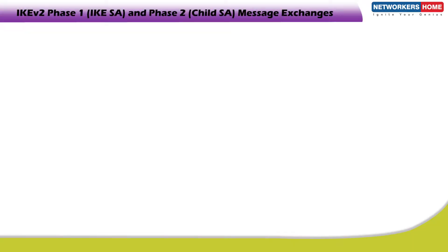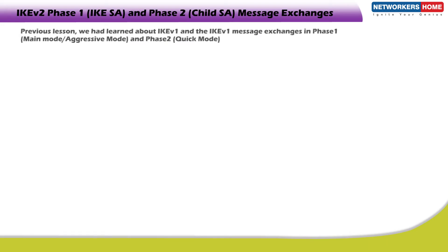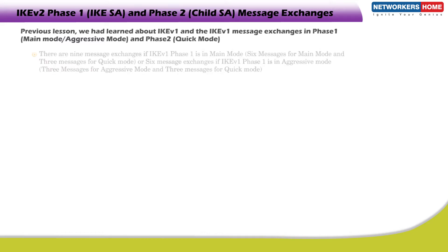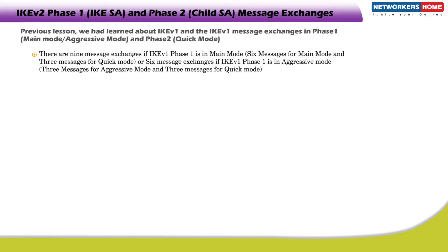IKE V2 Phase 1, IKE SA and Phase 2 Child SA Message Exchanges. In the previous lesson, we learnt about IKE V1 and IKE V1 message exchanges in Phase 1, Main Mode or Aggressive Mode, and Phase 2 Quick Mode. In IKE V1, there are 9 message exchanges.